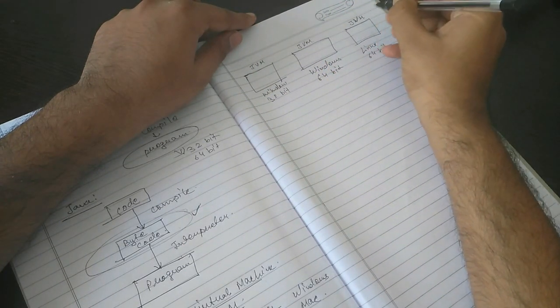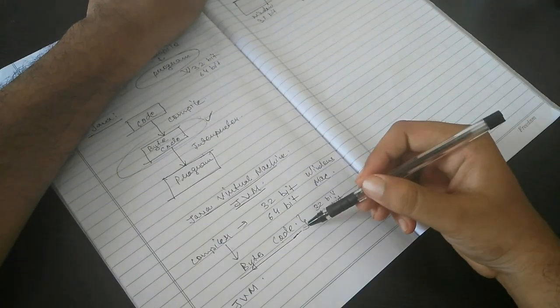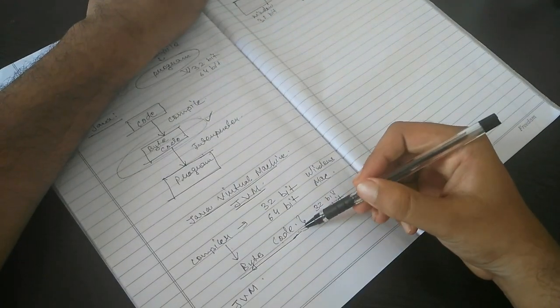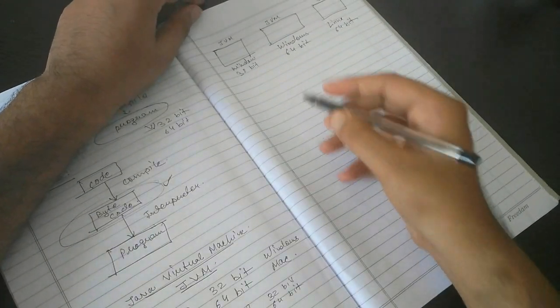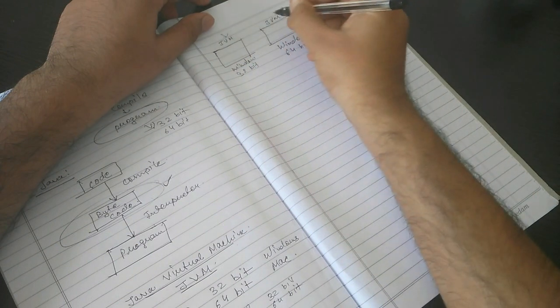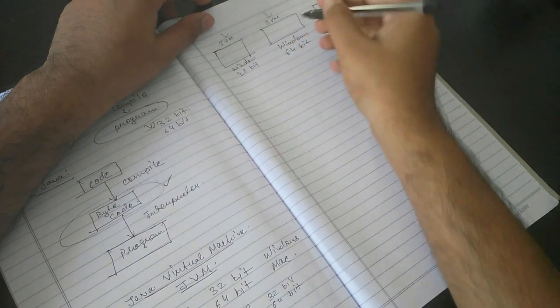When you are passing this bytecode, which is the same for all of these three, you send the bytecode to the system and this bytecode is processed by the JVM of all the machines.